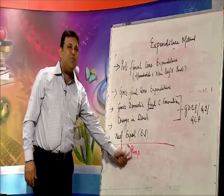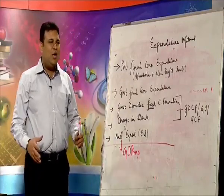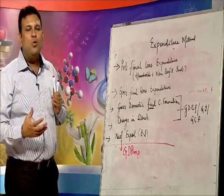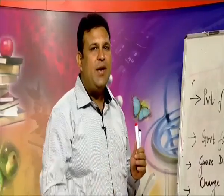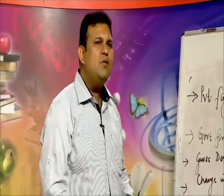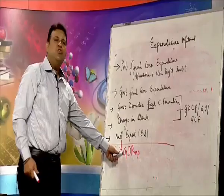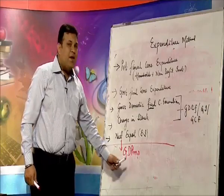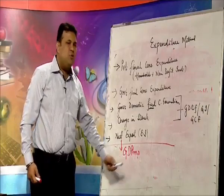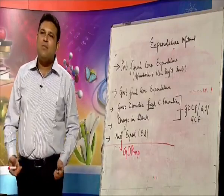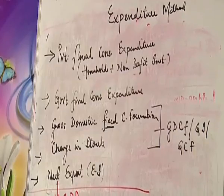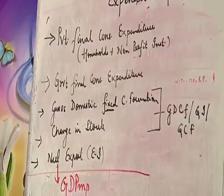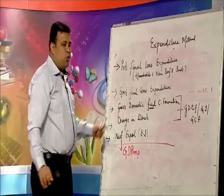Now it is very easy — how to go to NNP at FC if GDP at MP is given. GDP at MP: deduct depreciation, it becomes net; deduct NIT, it becomes FC; deduct NFIA, it becomes national. So NNP at FC is nothing but national income. If you want to remain at domestic income, you only deduct depreciation and NIT.